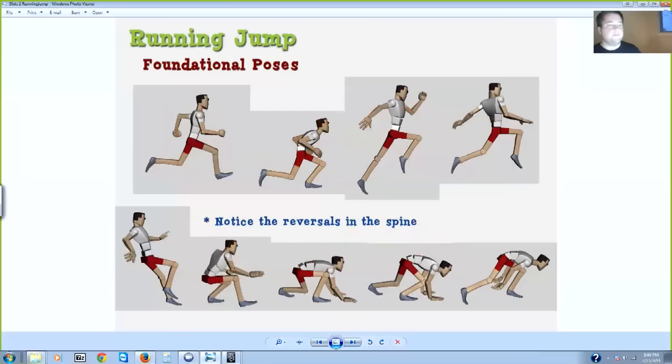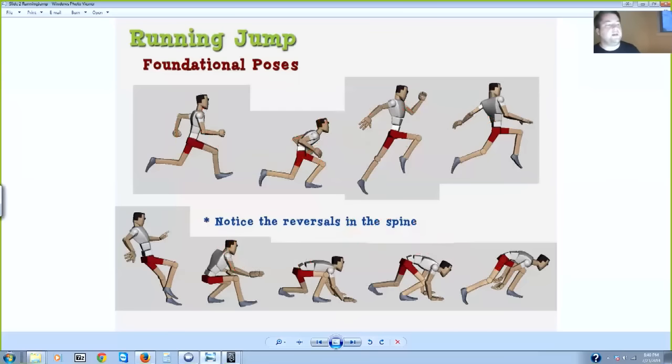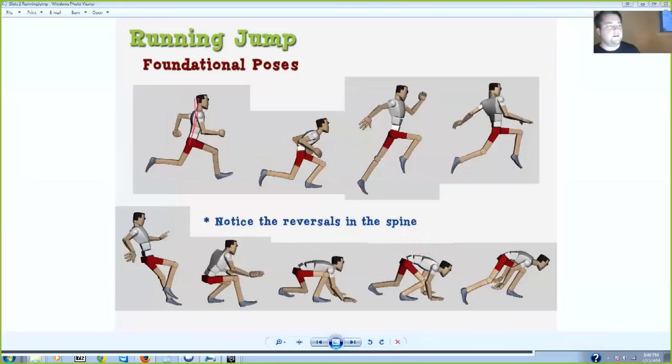Another example here is just showing the same thing with a rig. This is basically the same example we were just talking about. You're getting the back fairly straight here. Then when he's compressing down, you get this C shape right there.